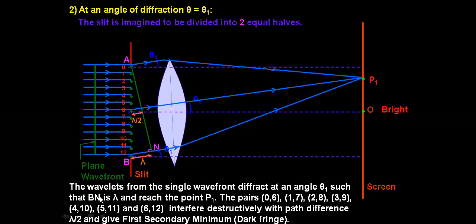In the diagram, if the slit is divided into 12 points, the wavelet from the single wavefront diffracts at angle theta such that BN equals lambda and reaches point P1. The pairs (0,6), (1,7), (2,8), (3,9), (4,10), (5,11) interfere destructively with path difference lambda by 2 and give the first secondary minimum, which is a dark fringe.